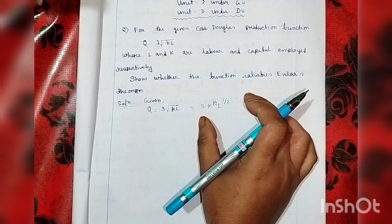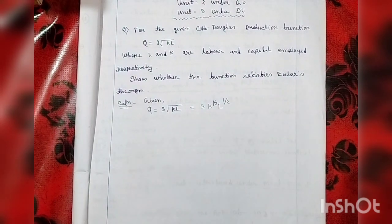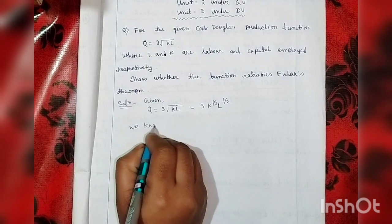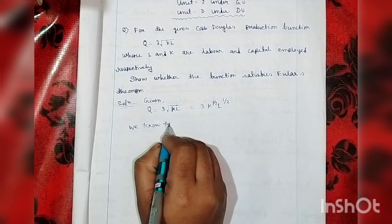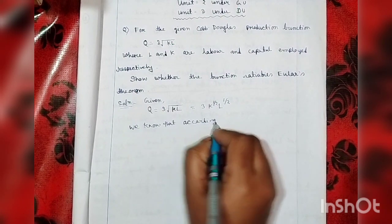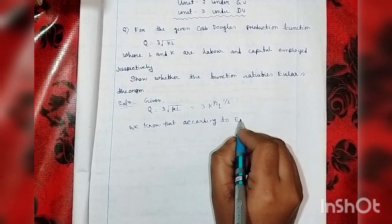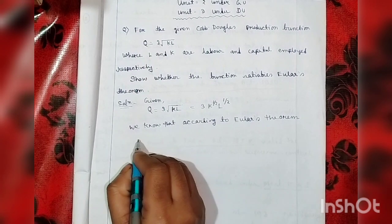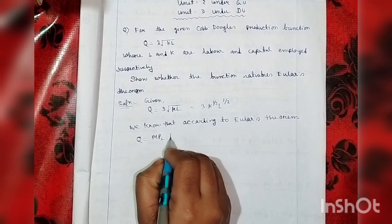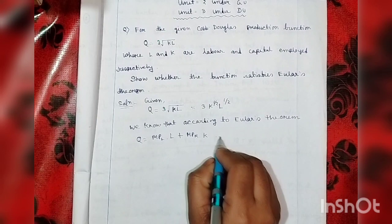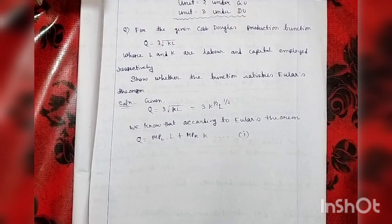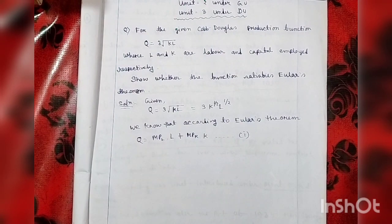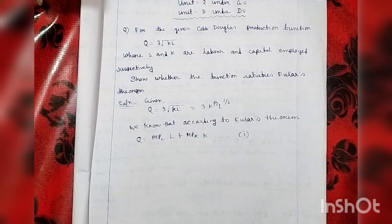Ultimately, our function is called Cobb-Douglas production function. So let's write the theory. According to Euler's theorem, Q equal to MPL into L plus MPK into K. This is equation number 1. Here, MPL represents marginal productivity of labour and MPK represents marginal productivity of capital.